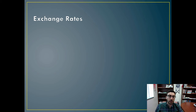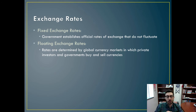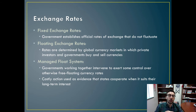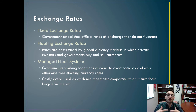Let's talk about exchange rates. There are several different kinds. There are fixed exchange rates, where the government establishes official rates of exchange that do not fluctuate. Then there are floating exchange rates, determined by global currency markets in which private investors and governments readily buy and sell different currencies. And there's also a hybrid called a managed float system, where governments work together to intervene and exert some control over otherwise free-floating currencies. This is a costly action that liberals in international relations use as evidence that states cooperate when it suits their long-term interests.